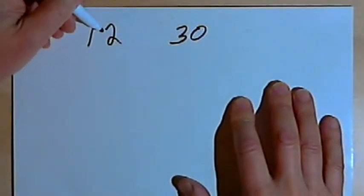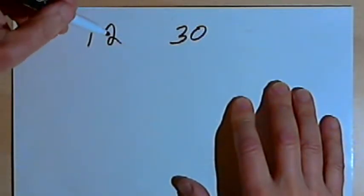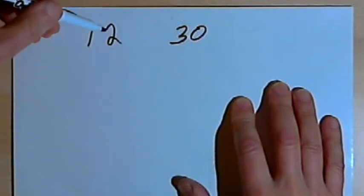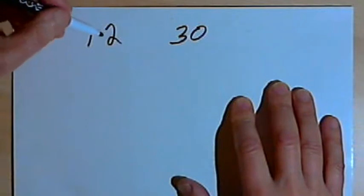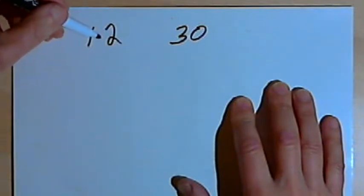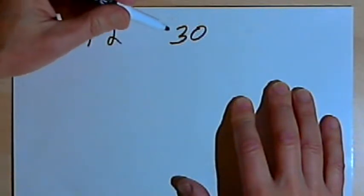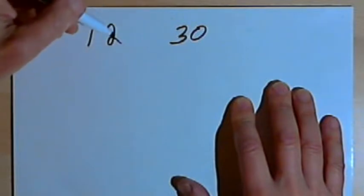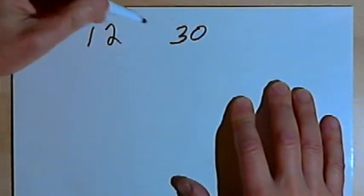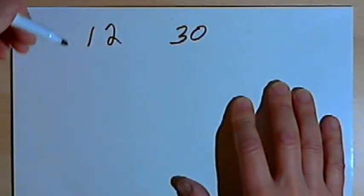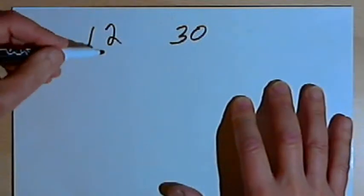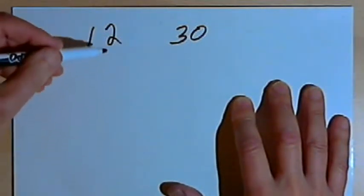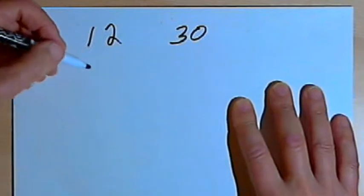Let's start with the two numbers 12 and 30 and see what this is about. We need to find the largest number that divides into both 12 and 30. That's going to be the greatest common divisor of those two numbers, or the greatest factor that those two numbers have in common. One way we could do this would be to list all the divisors or all the factors of each of the numbers and then compare the lists.